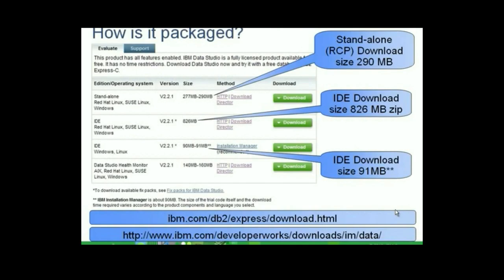Now let's talk about packaging. Data Studio is available in two packages: a standalone and IDE. IDE stands for Integrated Development Environment. With this package, you get everything Data Studio can offer, including an installation manager. It also allows you to integrate well with other IBM Eclipse-based tools. For example, if you have IDE installed in your system, after installing and starting Data Studio IDE package, you would see all the menus from IDE from the same console as one single tool. As you install more products that can be integrated like these, you will see more menus appearing from the same console. You can also shell share, meaning that you share the same Eclipse across all of these products.